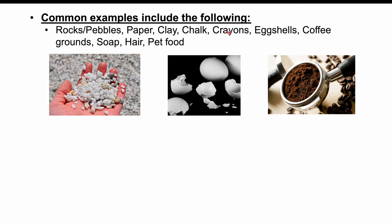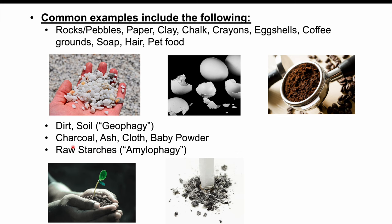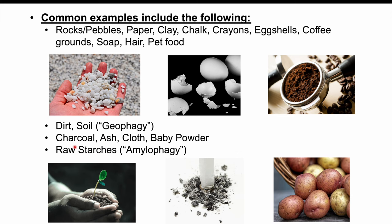Let's talk about things that patients may eat if they have pica. Commonly craved or eaten inedible objects include rocks and pebbles, paper, clay, chalk, crayons, eggshells, coffee grounds, soap, hair, and pet food. They can also crave or eat dirt and soil, which we call geophagy. They can also consume charcoal, ash, cloth, and baby powder. They may also crave raw starches, which we call amylophagy — for example, craving a raw potato.